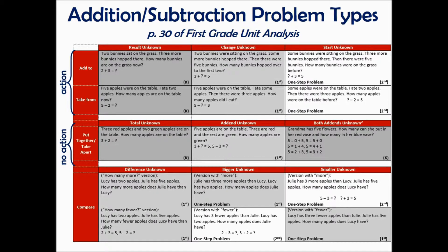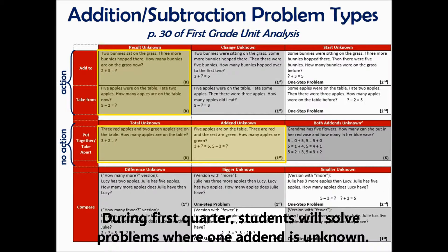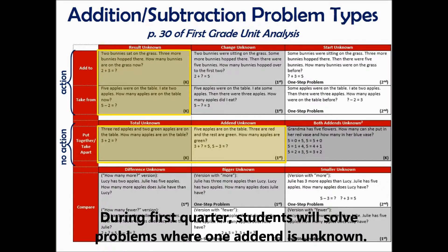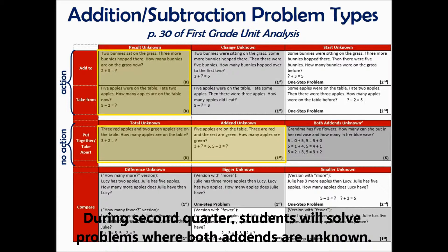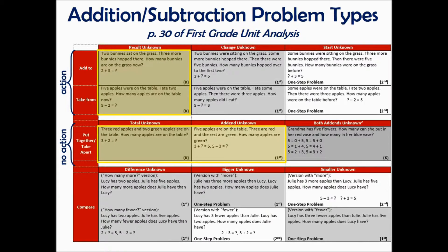The learning from kindergarten that we will continue in the first quarter includes action problems where the result is unknown, and no-action problems where the total is unknown. The new learning for first quarter during weeks one through three will look at unknown add-in problems. Kindergarten does teach unknown add-in problems towards the end of the school year, but mastery really won't occur until first grade. An example is: five apples are on the table, three are red, the rest are green — how many are green? We're looking at not knowing one of the parts and finding a strategy to figure out that missing part.